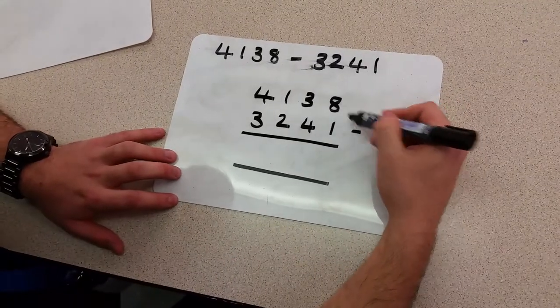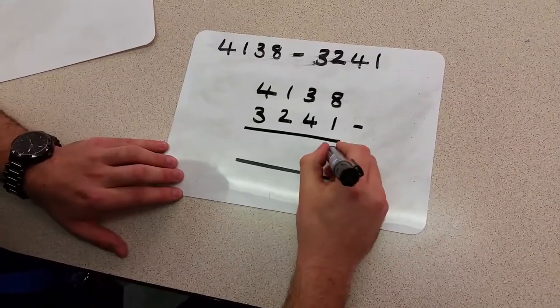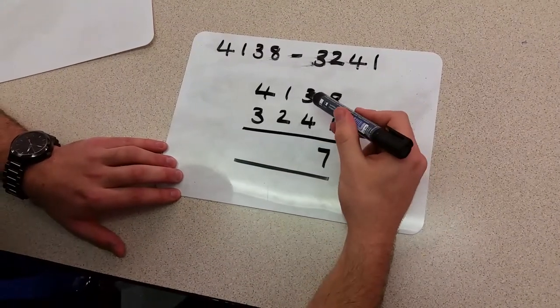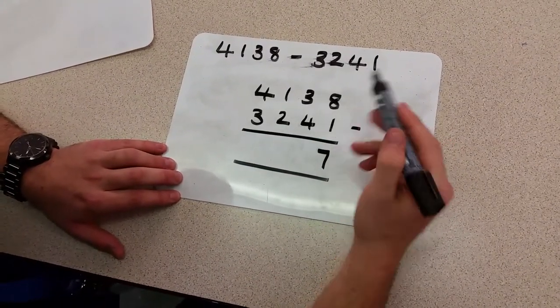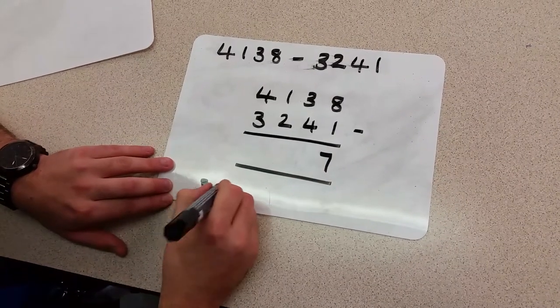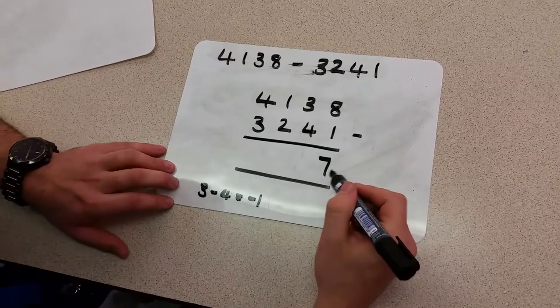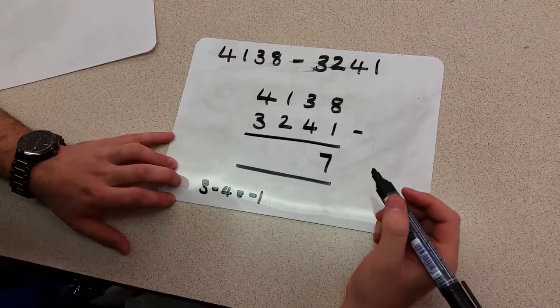So we're going to start with 8 take away 1. Now 8 take away 1 is pretty straightforward. That's 7. As we come across the place value into the tens column, we have 3 take away 4. Now realistically, 3 take away 4 is minus 1. To complete this method, we're going to say that we can't do 3 minus 4.